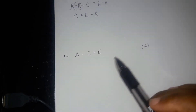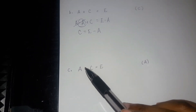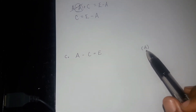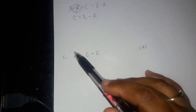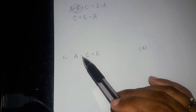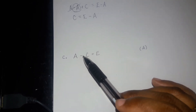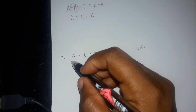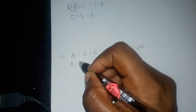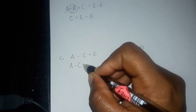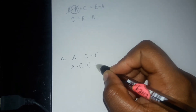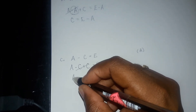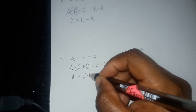Now you have a minus c equals to e and you want to solve for a. A is already on the left-hand side, so that's fine, but you need to get rid of c. C is negative, so you do the opposite and add it. You add c to the left-hand side and also add it to the right-hand side, because whatever you do to one side you must do to the next side. This cancels out and you end up with a equal to e plus c.